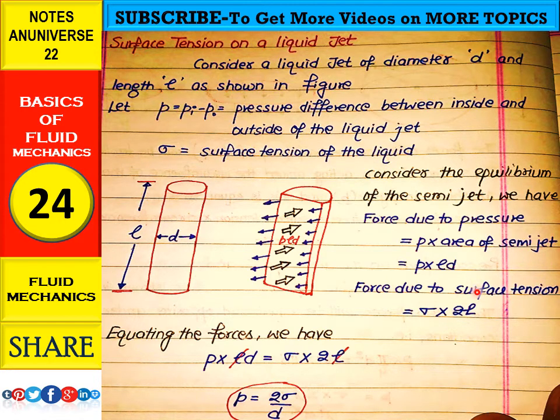This is the pressure force, this is the surface tension force. Under equilibrium, equating both equations: p·l·d equals sigma·2l. Finally, we get p equals 2 sigma divided by d.